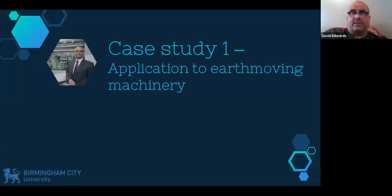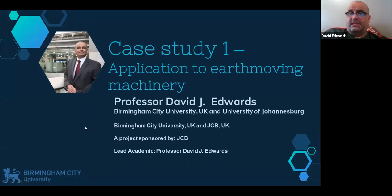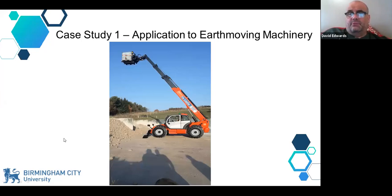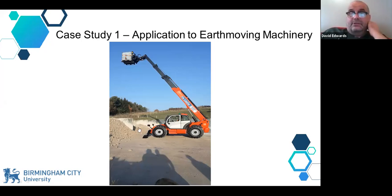Let's look at a couple of practical examples. I can't go into too much detail because of non-disclosure agreements, but I can give you a flavour of what they involve. This first one was led by myself working with JCB, the world's largest equipment manufacturer. We wanted to look at earth-moving machinery and materials handling equipment. This is a rough terrain telescopic handler — you can see it's got a fixed weight of water barrels strapped to the forks. A lot of these machines overturn because people don't use the outriggers at the front.